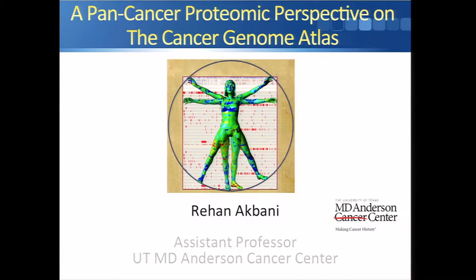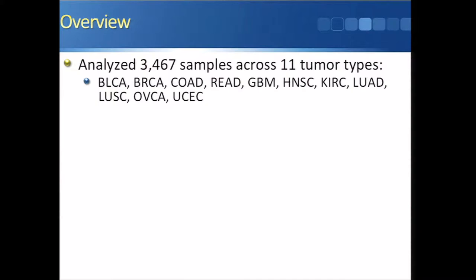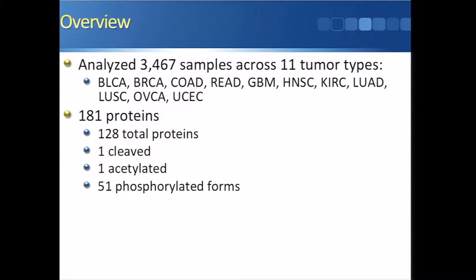We at MD Anderson generate RPPA data — protein expression data — for TCGA. In this particular study, we analyzed 3,467 samples across 11 different tumor types, those listed there. We did not receive any AML samples, so as opposed to pan-can-12, we had pan-can-11.